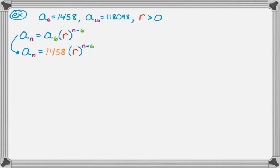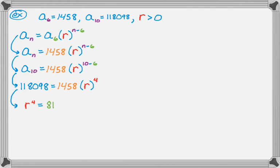Now I need to figure out what r is, so I'm going to use the other thing I know, which is a sub 10. So I'm going to replace every n that I see with 10. So r to the 10 minus 6, and 10 minus 6 is just 4. I'm going to now replace a sub 10 with what it equals, which is 118,098. So I have 118,098 equals 1458 r to the 4th. And now I just need to solve for r. So if I divide by 1458, I get r to the 4th is 81.